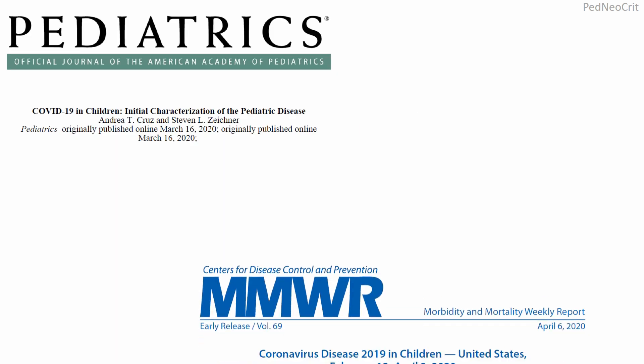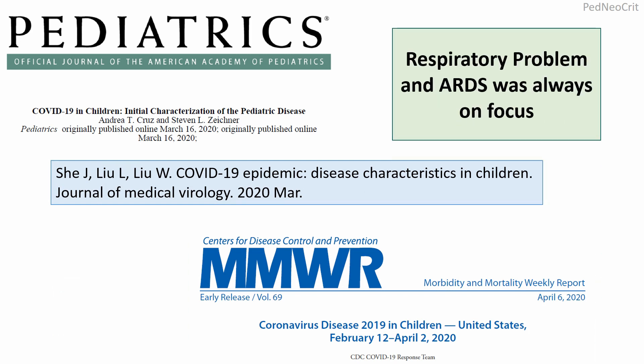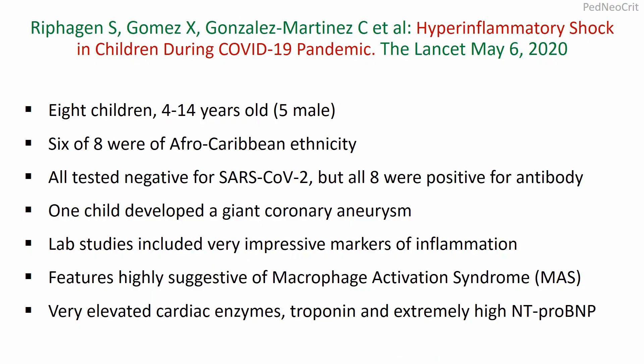Many reports focused on respiratory problems and ARDS, but hyperinflammatory shock in children during the COVID-19 pandemic later emerged. One report described 8 children aged 4 to 14 years, among them 5 male and 6 of 8 of Afro-Caribbean ethnicity. All tested negative for SARS-CoV-2 but all 8 were positive for antibody. One child developed a giant coronary aneurysm. Lab studies showed very impressive markers of inflammation, features highly suggestive of macrophage activation syndrome, very elevated cardiac enzymes — troponin I and extremely high pro-BNP.